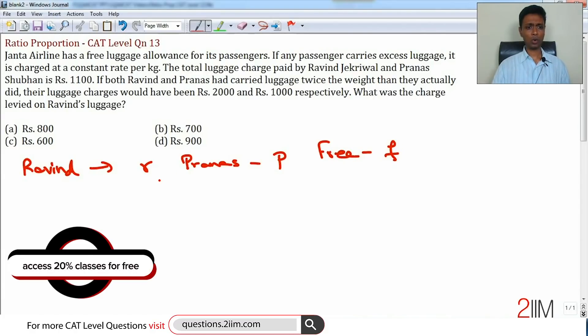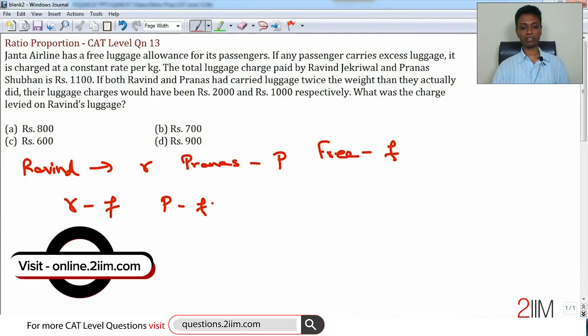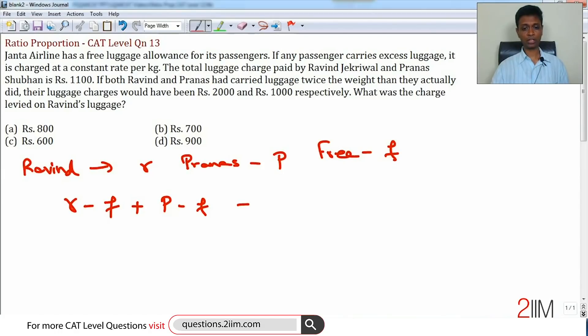Now what we are told is when they take r minus f, this is extra, and p minus f, then totally both put together they pay something like 1100. Remember this r minus f and p minus f are technically in kilograms.